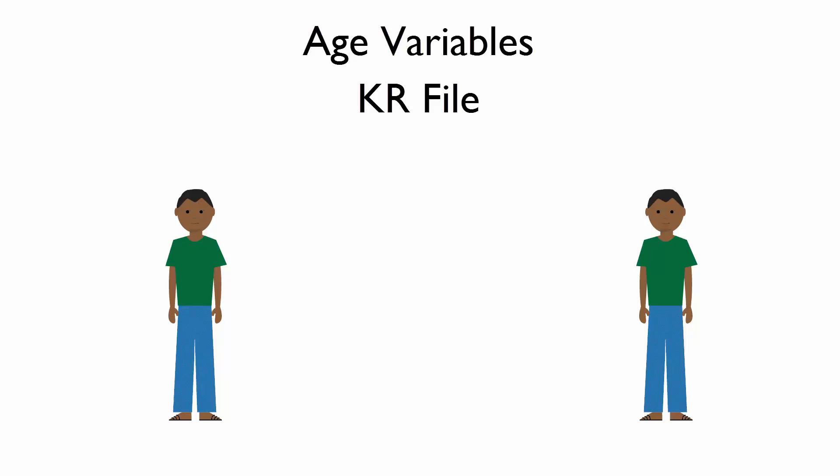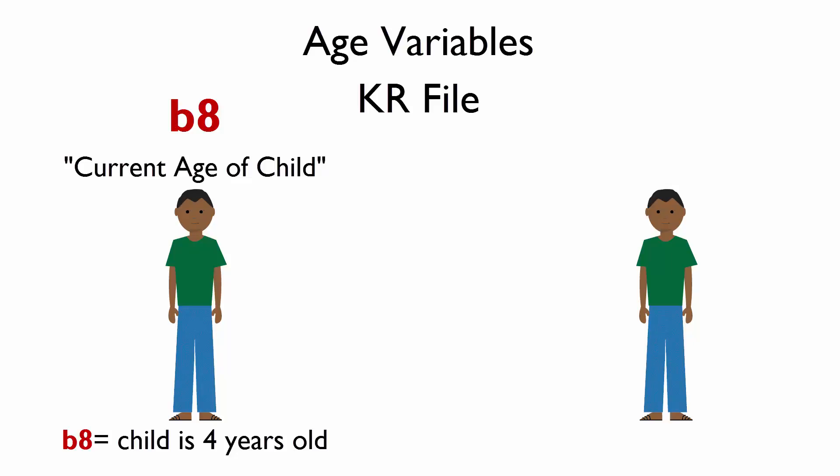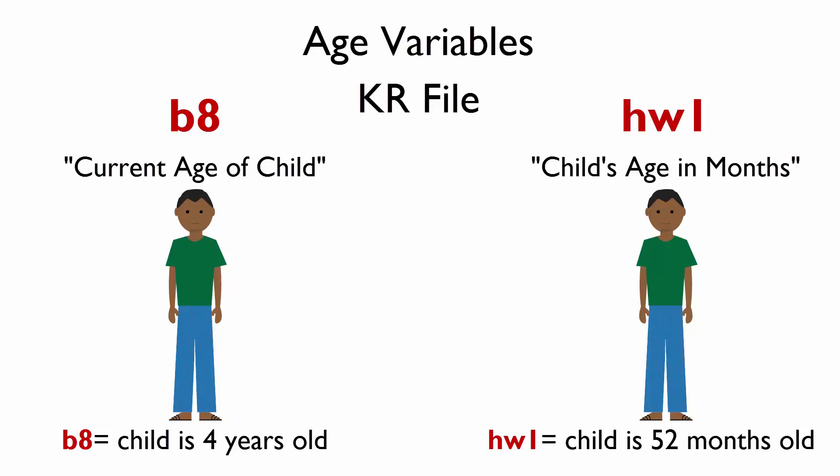When we search the dataset for age variables, we see one variable called B8, which is current age of child, while there is another variable, HW1, which is called child's age in months. At first glance, one would assume that these two variables should have information about the same number of children.